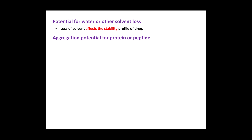The next is aggregation potential for protein or peptide. This involves studying the deposition of protein in the liver, kidney, spleen, or other tissues in certain diseases.